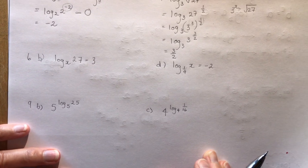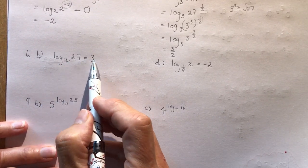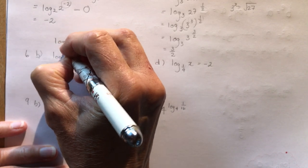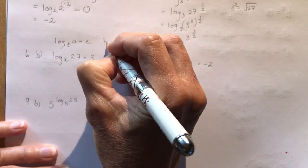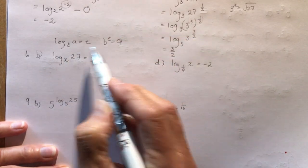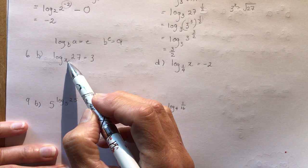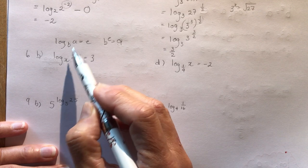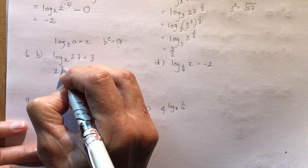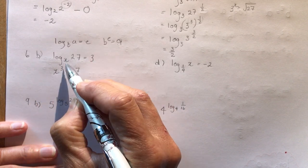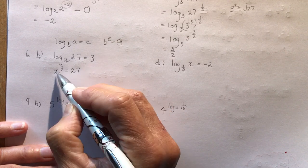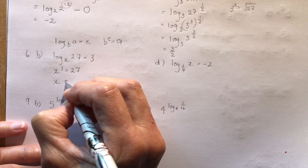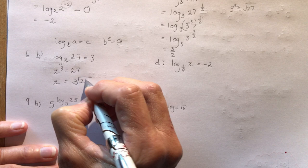Log base x of 27 equals 3 — this one is written a little differently. Using 'be a log bay,' I convert from logarithmic to exponential form: my base is x, so x to the power of 3 equals 27. Taking the cube root of both sides, the cube root of 27 is 3, so x equals 3.